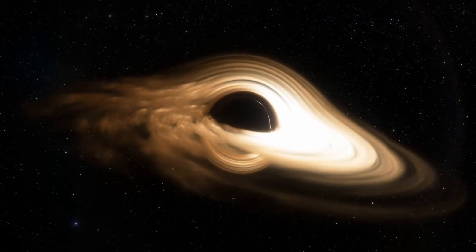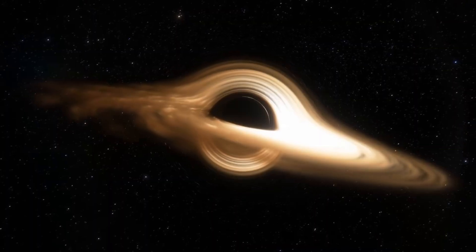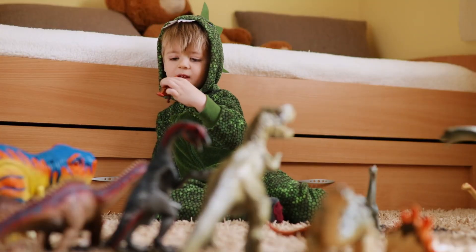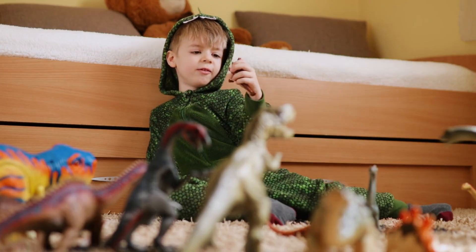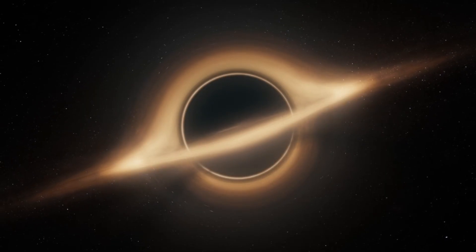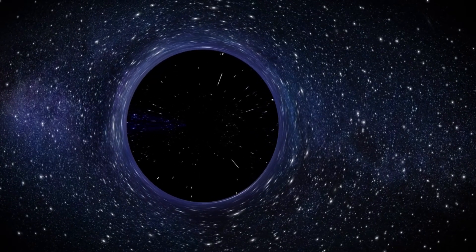Over time, they grow by slowly accreting gas or by merging with other black holes, gradually becoming the titanic monsters we see in the centers of mature galaxies today. But GNZ-11's black hole is already a giant, devouring material at breakneck speed, with no sign of slowing down. It's like finding a fully grown T-Rex in a nursery full of baby dinosaurs. It just doesn't add up.